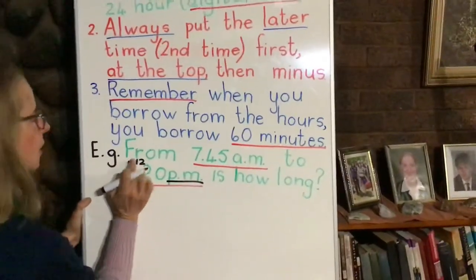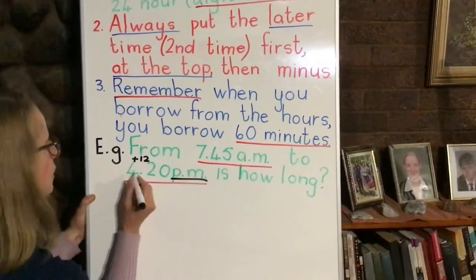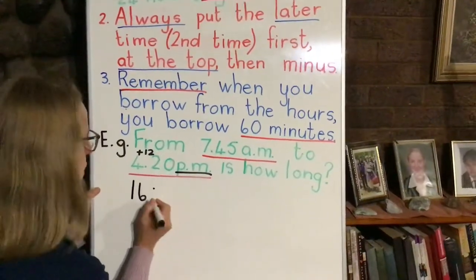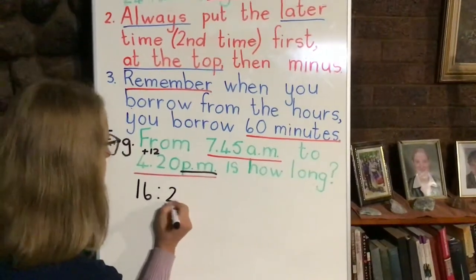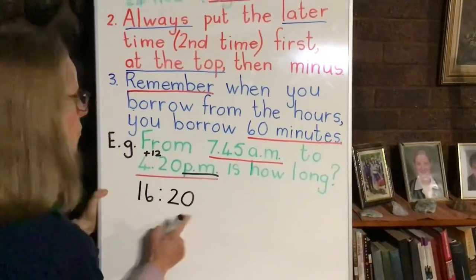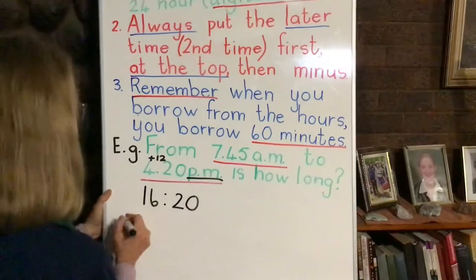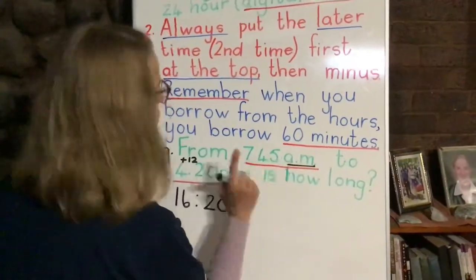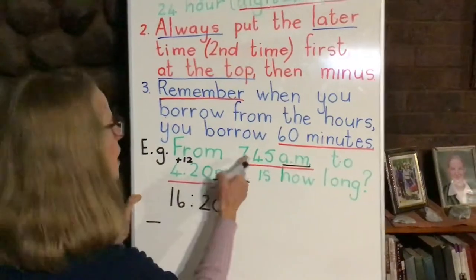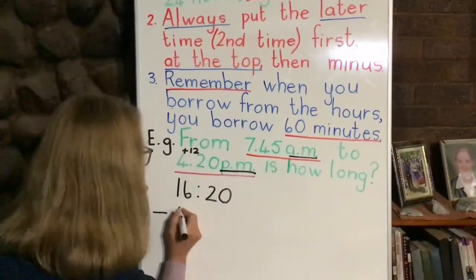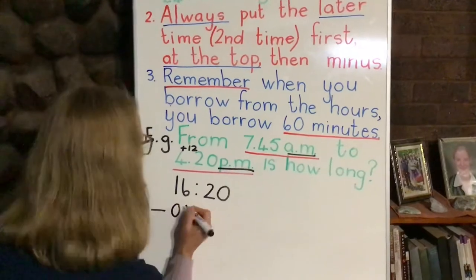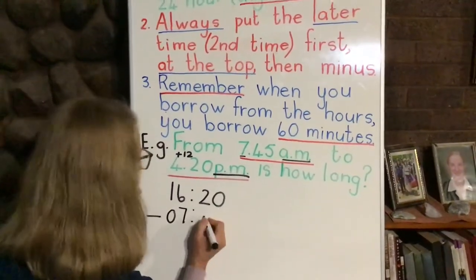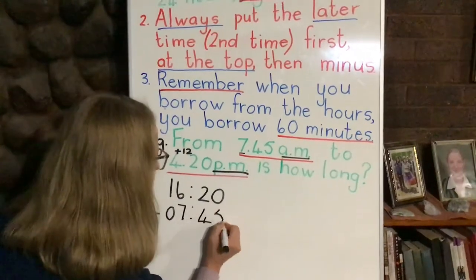PM means we must add 12 hours onto our hours. So that would be 12 plus 4 is 16, then a colon and the minutes stay the same. Then we're going to minus off that first time, 7:45am. Now it's AM, so we do not have to add on 12 hours — we simply leave the number the same and put a zero in front because there's only one digit here. The 45 minutes stay the same.